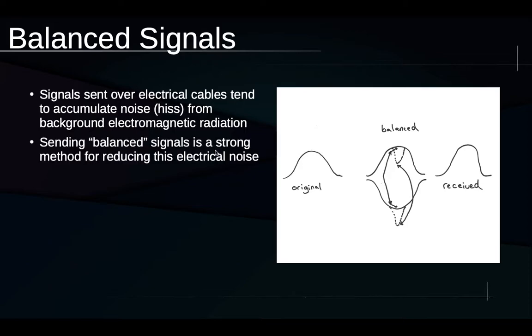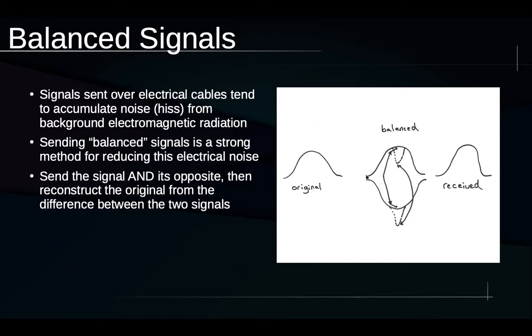So balanced signals is a really strong method for addressing this problem and reducing that electrical noise. And the way it works is that we send the signal, here's the signal being sent here, and we also send the opposite of the signal, like the signal inverted at the same time. So we need a different wire to do that. And then at the point of reception, what we do is we take the difference between those two signals, and we use that to reconstruct the original signal. So if you think about it, as the signal, the original signal gets higher, so here's the original signal getting higher, the opposite gets lower, and also the difference between the two signals gets bigger. So the difference between the two signals, it's still proportional to the original.